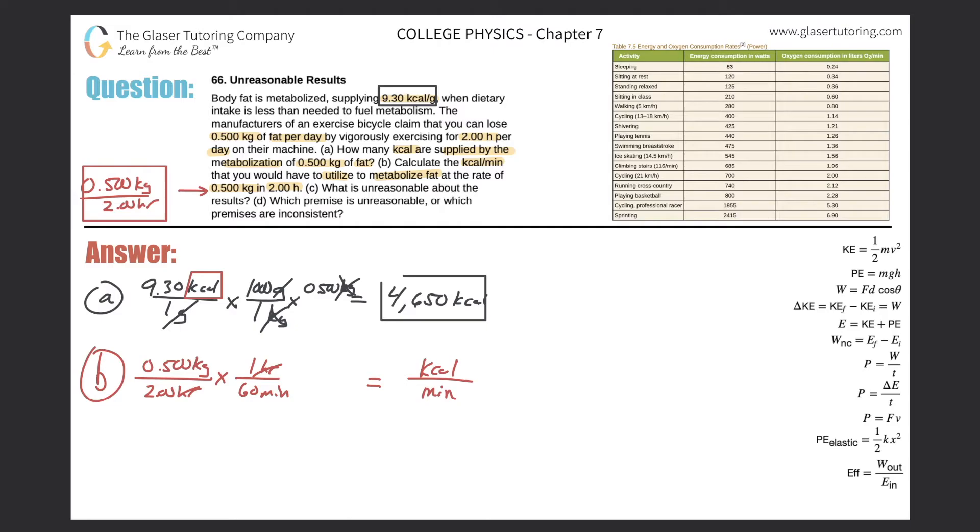I need to get rid of kilograms and introduce kilocalories into the mix. I was given the value relating kilocalories per mass, per gram. First I have to convert my kilograms into grams: kilograms on the bottom, grams on the top, one thousand grams per kilogram. Now I can use the conversion factor that says for every one gram of fat there are 9.30 kilocalories. The grams cancel and this is what you're left with: kilocalories per minute.